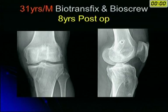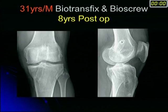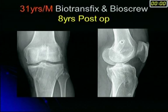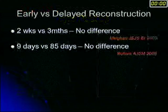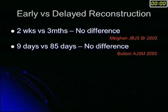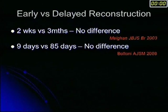This is one of my patients — he is only 31 years old. He underwent an ACL reconstruction about 8 years back using a bio-absorbable transfix with a bio-screw. You can see it's a vertical ACL reconstruction — this is how we were taught at that time and were routinely doing it. The patient is still very active and plays badminton every day, but you can already see early arthritic changes developing on the medial side. As far as early versus delayed reconstruction: whether you do it early or delayed by about 3 months, it doesn't make much of a difference.